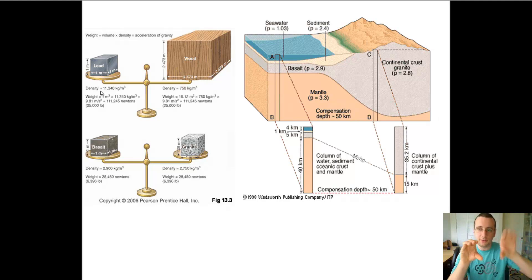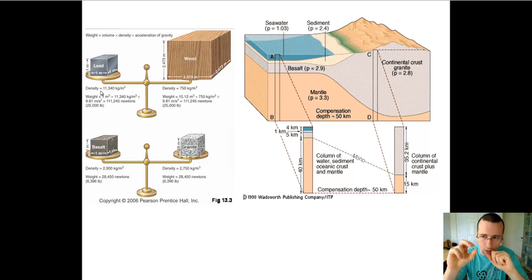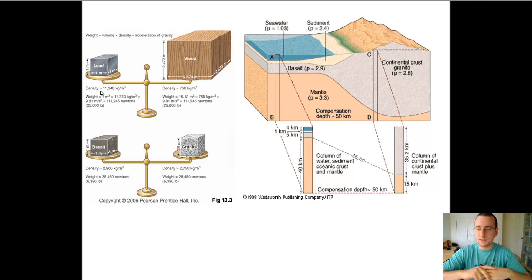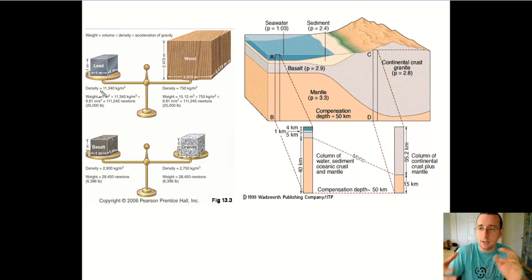That explains why the continental crust is usually thicker than the oceanic crust: because its density is lower, the same weight takes up more space in the continents than in the oceans. It also explains why oceanic crust usually subducts underneath continental crust when they collide — the densest one goes underneath. The oceanic crust is constantly melting, but the continental crust is not. That's why the continents remain for billions of years. When continents collide with each other, they typically accrete and become one larger continent.